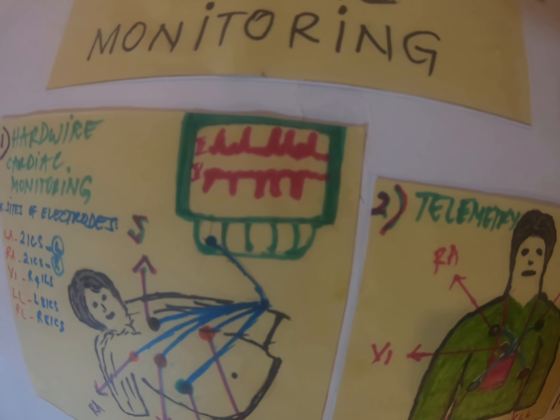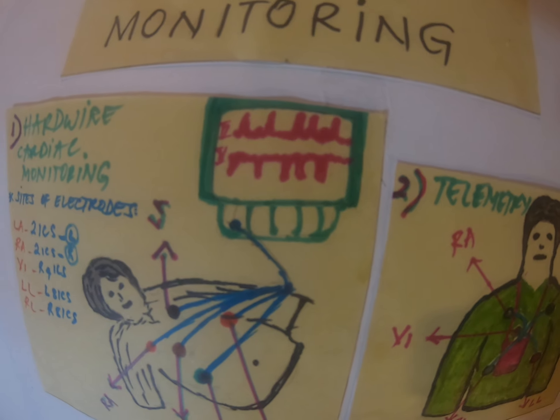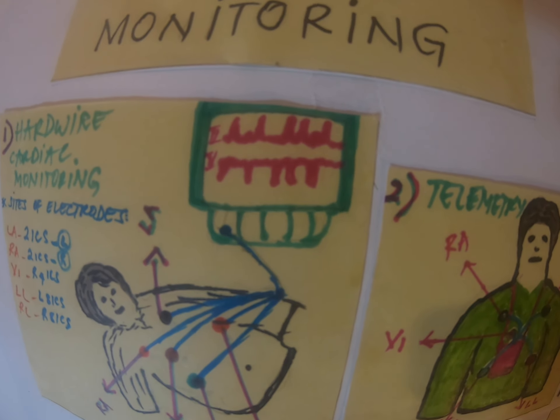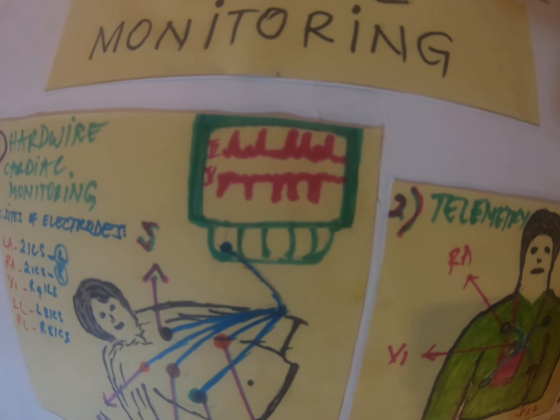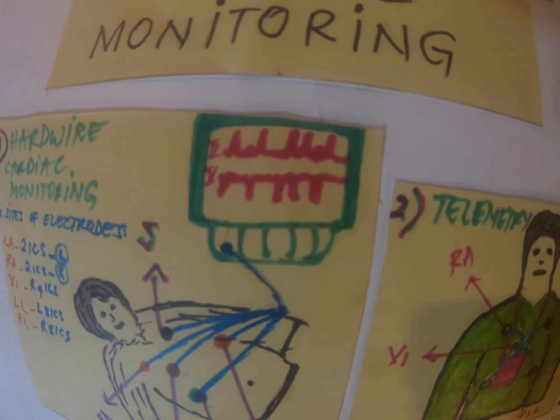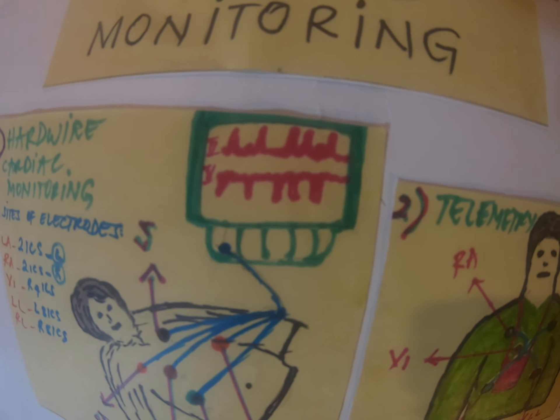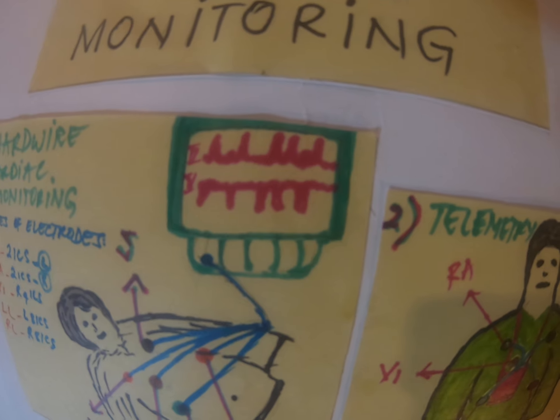We have a cardiac monitor mounted on the wall. It gives us strips if you want to see something, and you can hook up blood pressure and any kind of pressures — everything there is accessible.